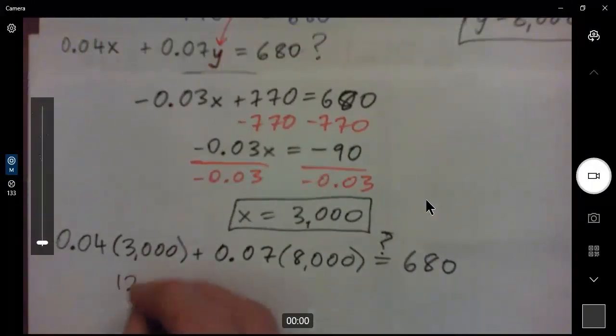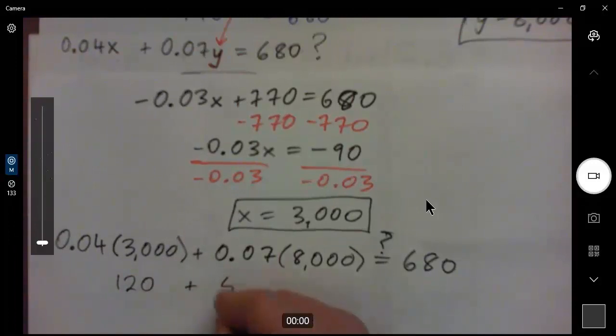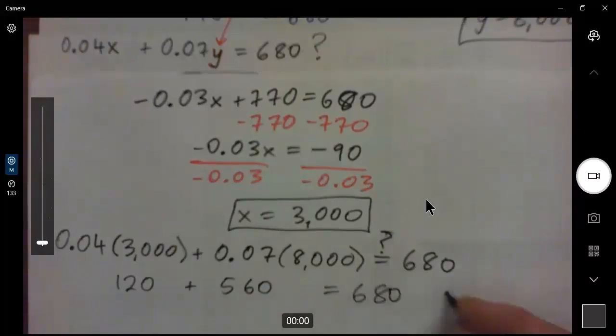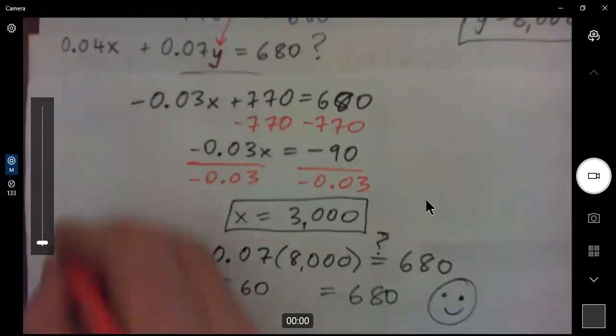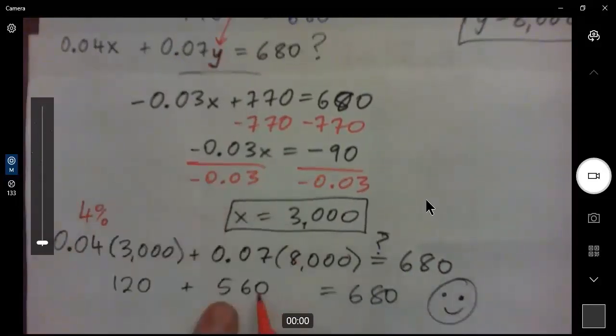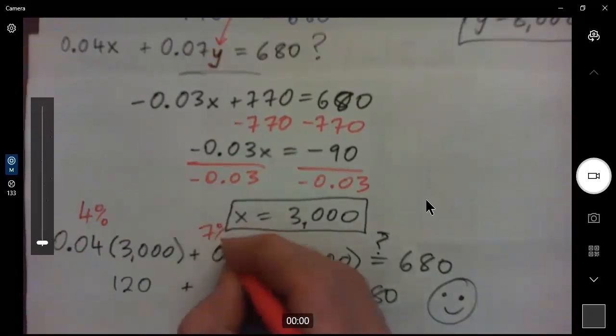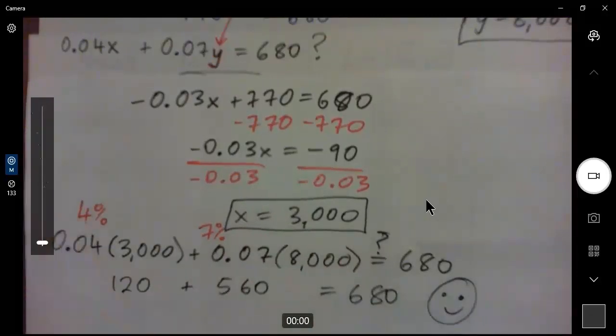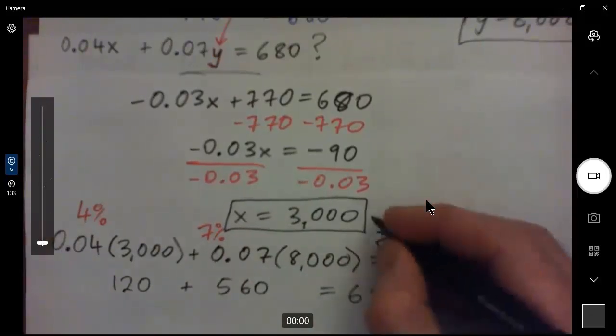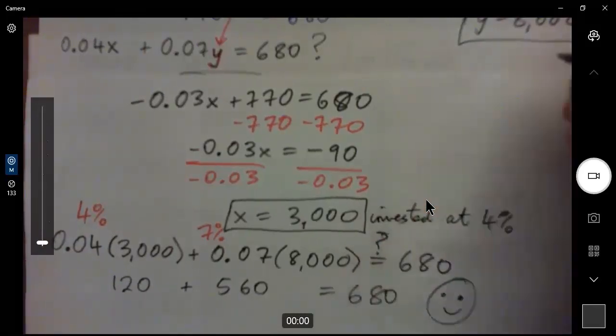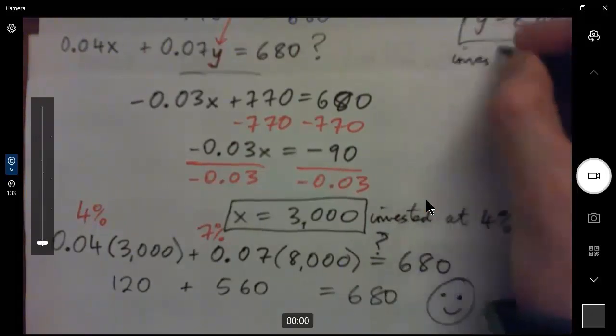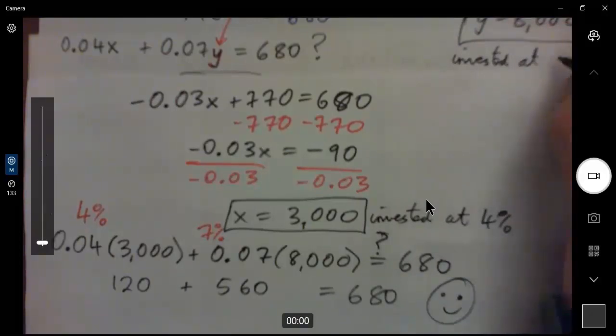Yeah. If you multiply these, you guys, you'll find that's $120. If you multiply these, you'll find that's $560. And if you add those, you'll find that that is 680. So, it does work. Now, the key here is that we got $120 interest from this account that paid 4%. This is the 4% account, remember? We got $560 interest from this account that paid 7%. And they added. So, the answer is that we have $3,000 invested at 4%. We have $8,000 invested at 7%. Okay?